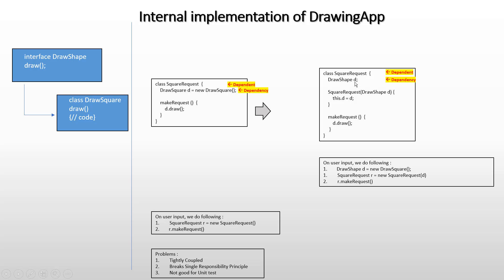Though we are not instantiating DrawShape inside SquareRequest, we have delegated the responsibility to the caller. Whoever is calling makeRequest must take responsibility for instantiating SquareRequest and supplying the proper DrawShape. So there are still some problems here — our whole purpose is just to obtain a SquareRequest, but to do that we end up also instantiating a DrawShape with either DrawSquare or DrawBigSquare.